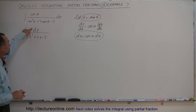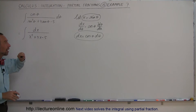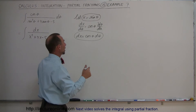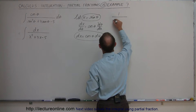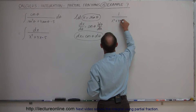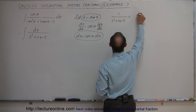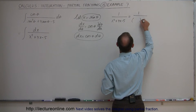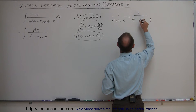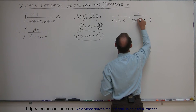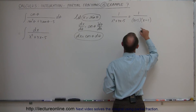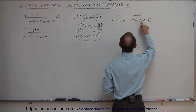Let's take the integrand: 1 over x squared plus 4x minus 5. We need to factor the denominator. We try x and x, and we need factors that multiply to minus 5 and add to plus 4. Plus 5 and minus 1 works: 5 times minus 1 is minus 5, and plus 5 minus 1 is plus 4.